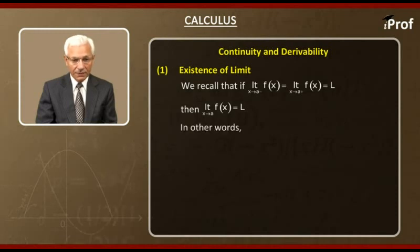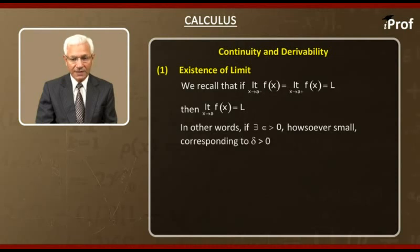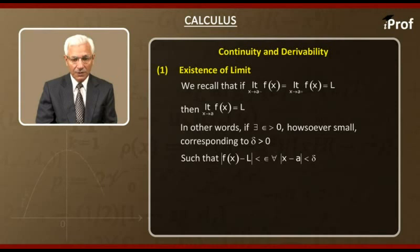In other words, if there exists epsilon greater than zero, howsoever small, corresponding to delta greater than zero, such that modulus of f(x) minus L is less than epsilon for all modulus of x minus a less than delta, we say that the limit exists and L is the limit.